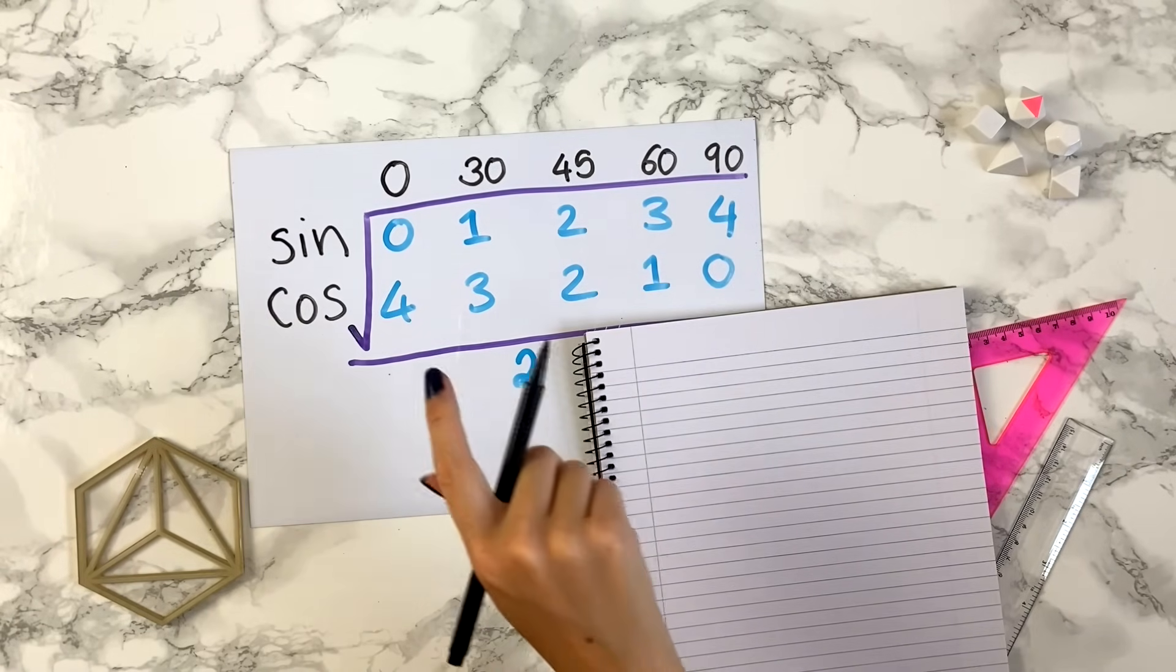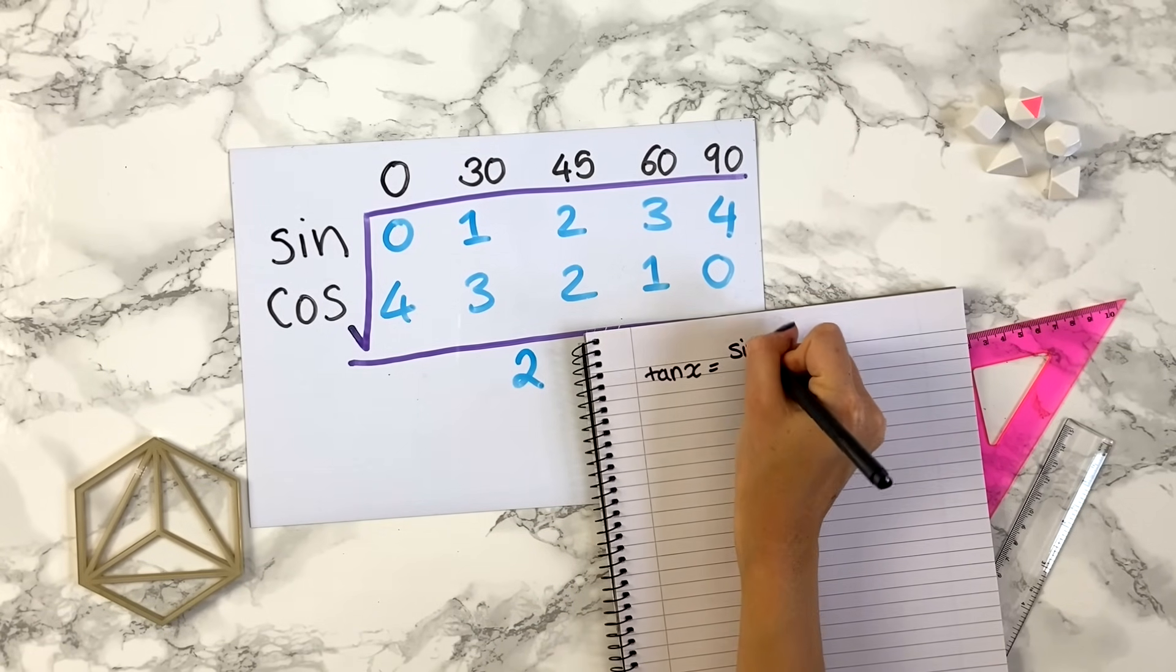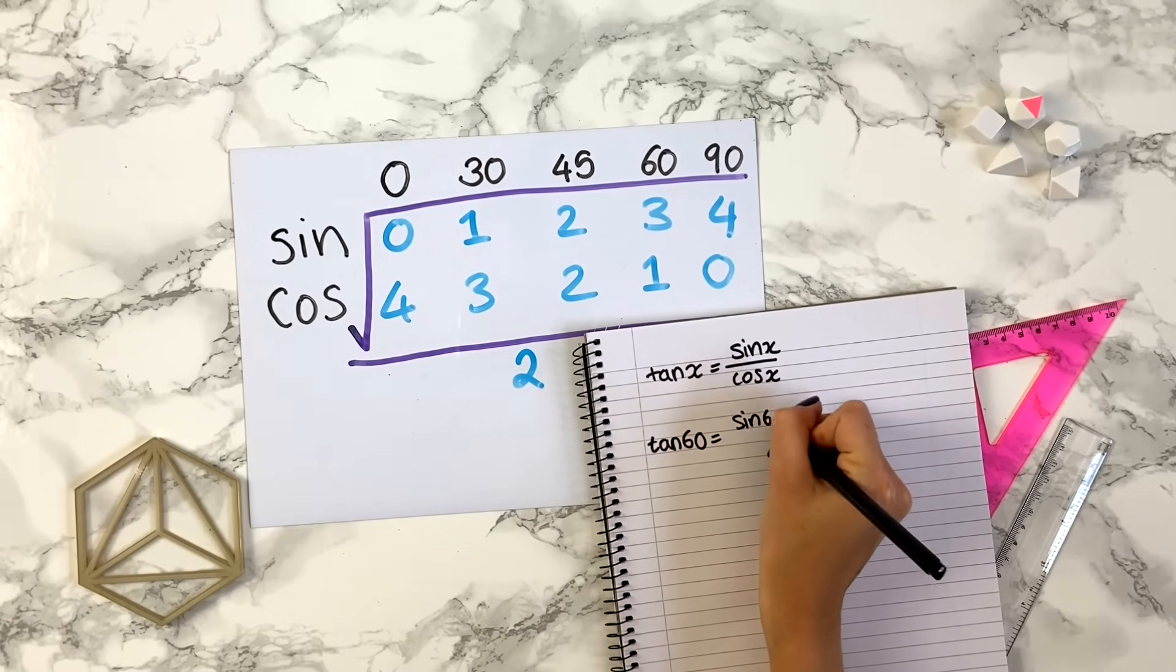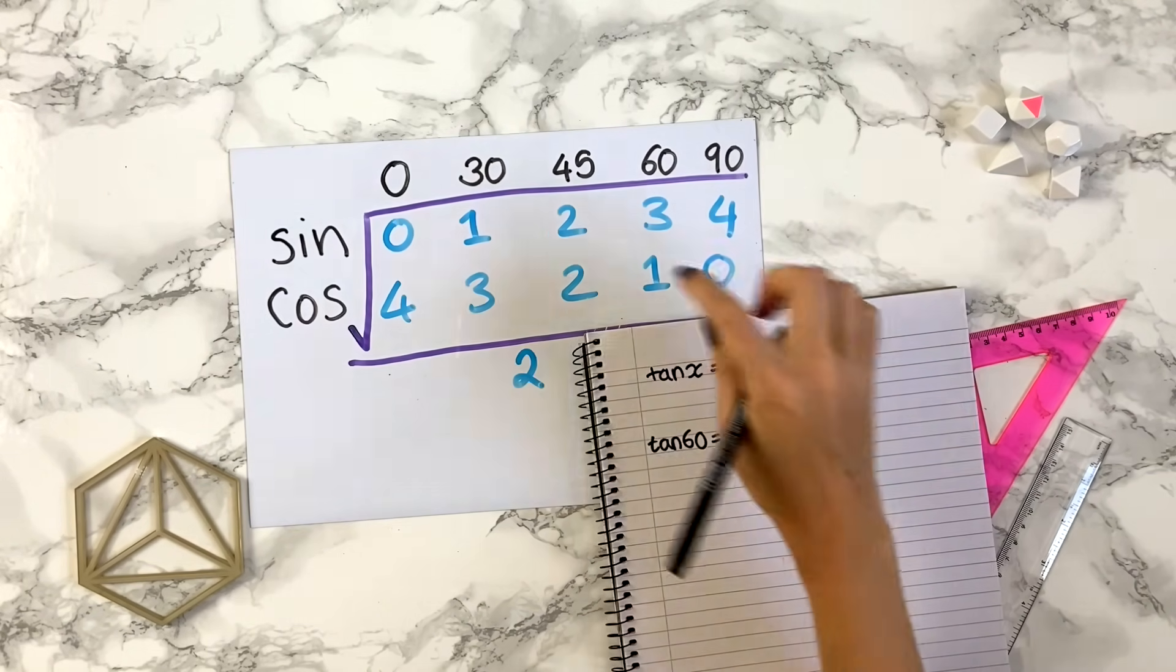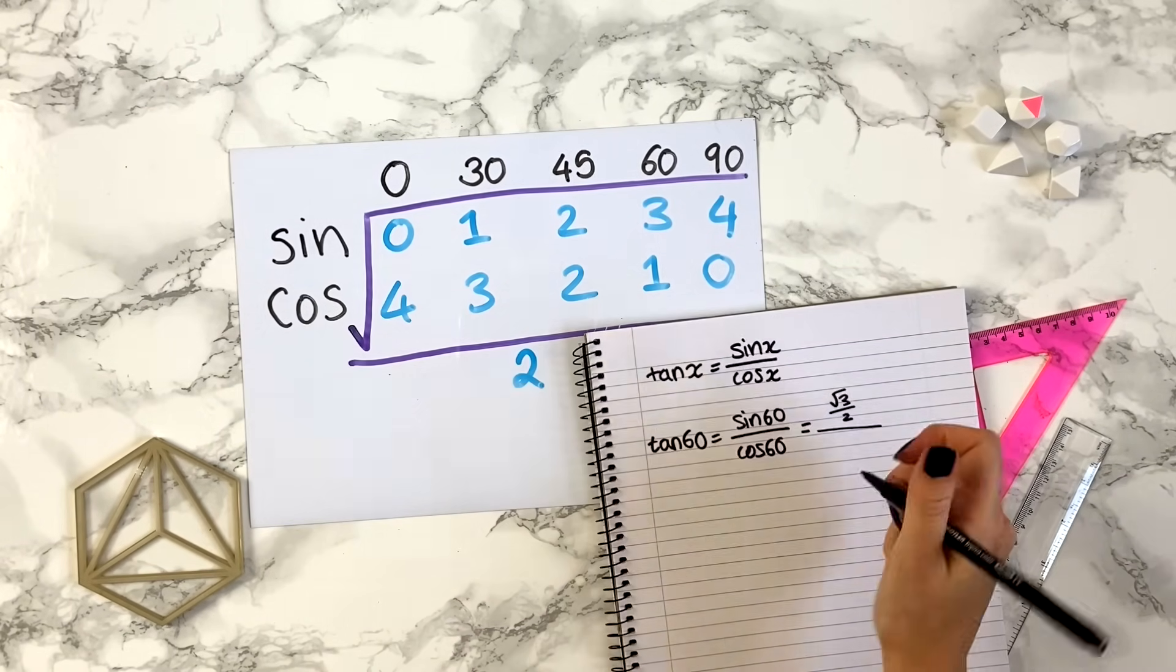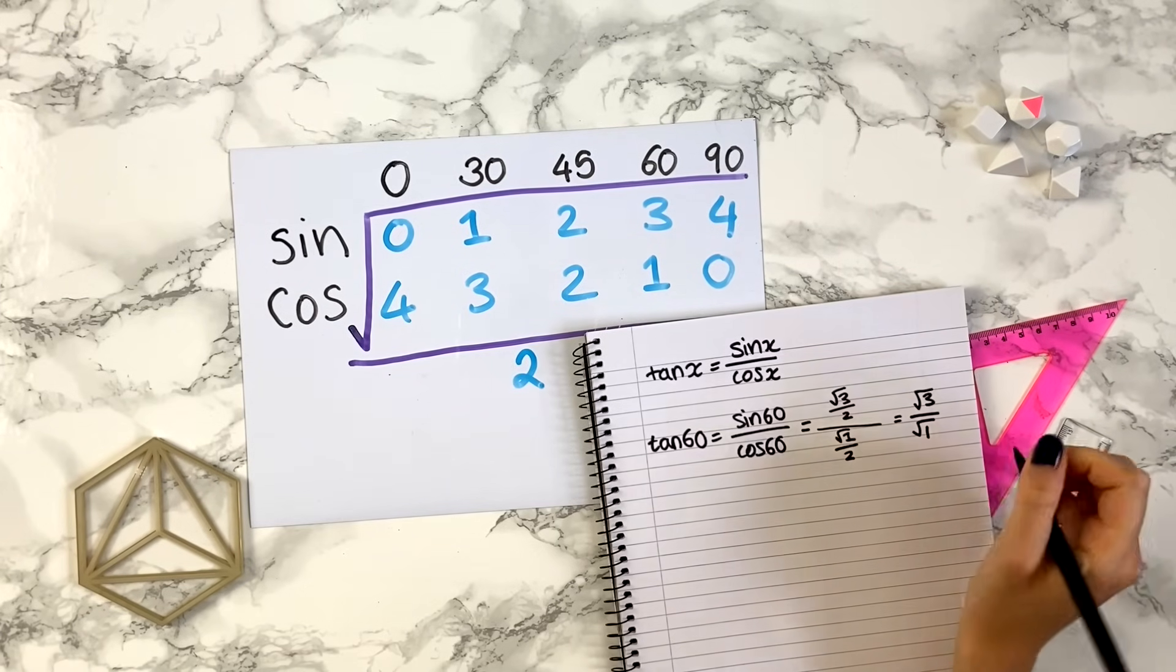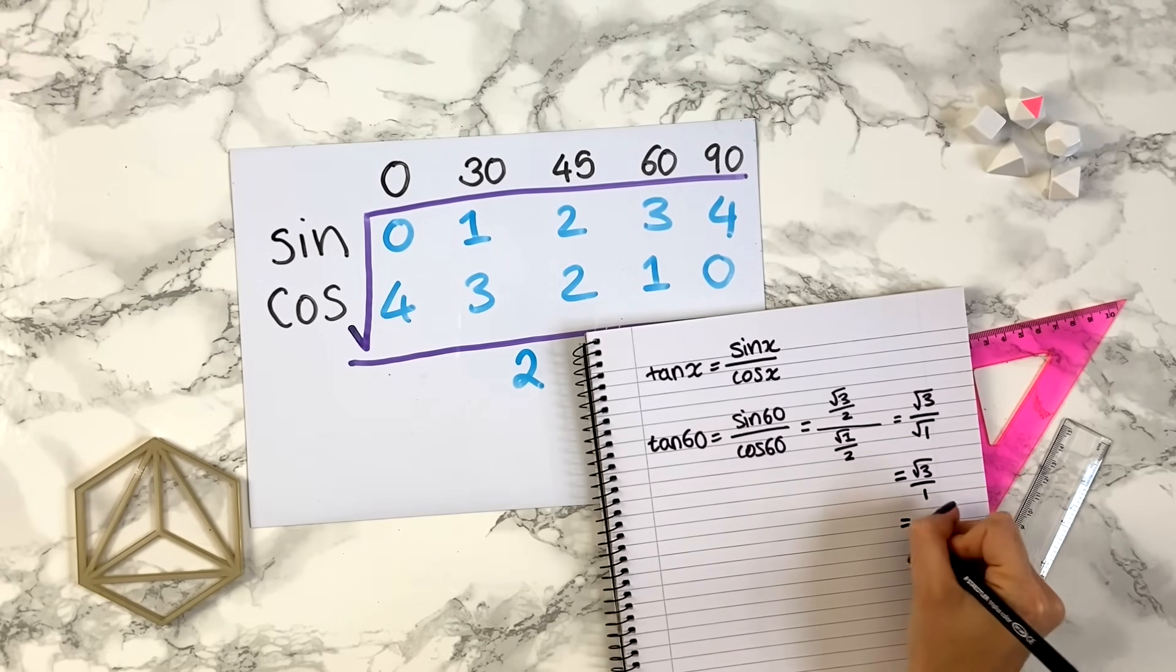Note that this can also help you find key tan values, because remember tan of x is sine of x divided by cos x. So if you want to find, say, tan of 60, this is the same as sine of 60 over cos of 60. Sine of 60 you can find here as being the square root of 3 over 2, and cos of 60 you can find as being the square root of 1 over 2. You can times top and bottom by 2, so the 2s cancel, so you get root 3 over root 1.